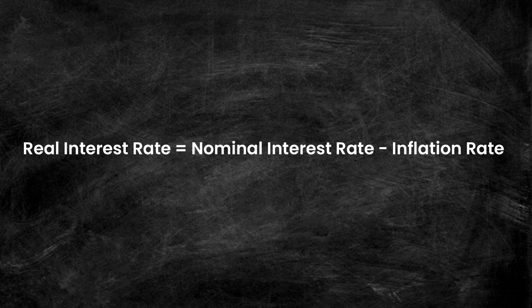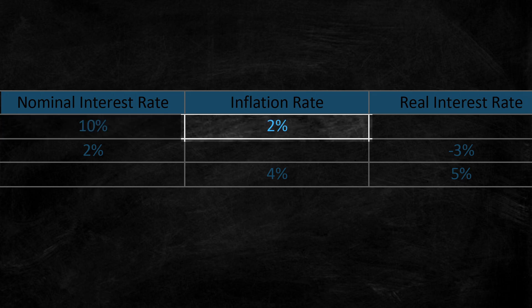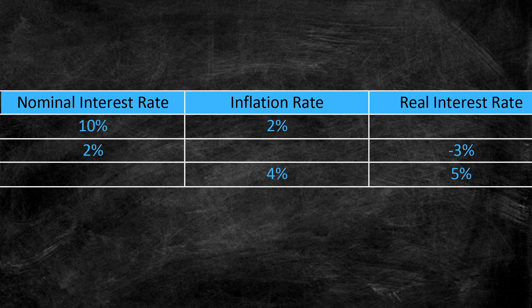So with this formula, given any two pieces of information, we can solve for the third unknown with some simple rearranging of the equation. Let's try out some examples together. If the nominal interest rate is 10% and inflation is 2%, what is our real interest rate? Well, following our formula, it's simply 10% minus 2%, which is 8%.